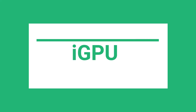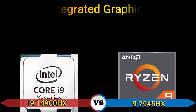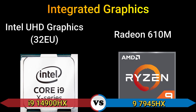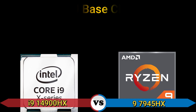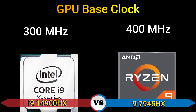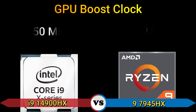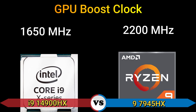Part 3: iGPU. Integrated graphics: Intel UHD Graphics 32EU and Radeon 610M. GPU base clock: 300 MHz and 400 MHz. GPU boost clock: 1650 MHz and 2200 MHz.